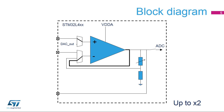This slide shows the block diagram of the operational amplifiers. The STM32L4 integrates two operational amplifiers. Several switches are used to configure different functions, and each op-amp can be configured differently.